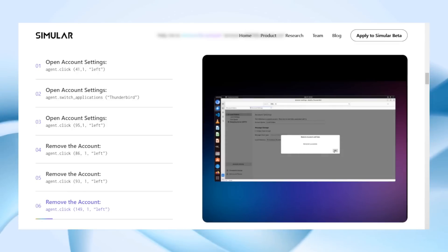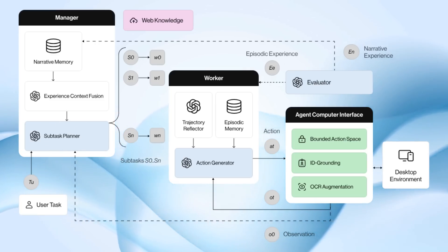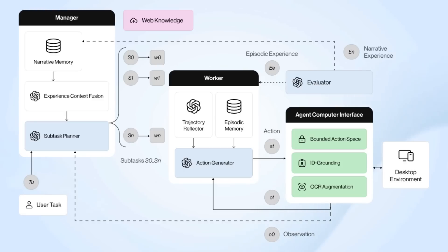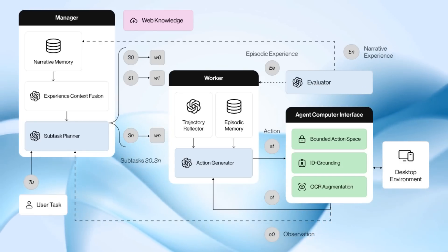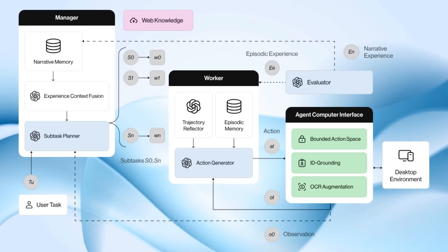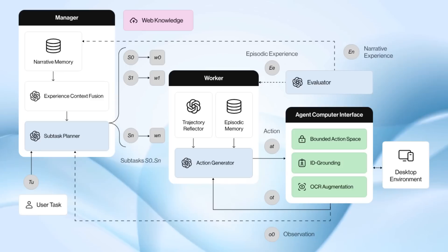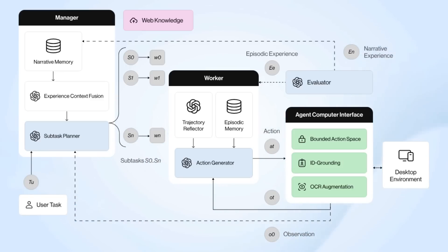From those two inputs — external knowledge and internal experience — they then start a planning process. The manager formulates a query based on the task, goes out to external knowledge, and also retrieves relevant experiences from internal memory. From that, it creates a detailed plan of subtasks. While LLMs are perhaps not the best at formal planning, they are good at generating ideas of what to do next. Those subtasks are further broken down using episodic memory — the high-level stuff gives direction, while the low-level stuff is what buttons to press and what fields to click into.